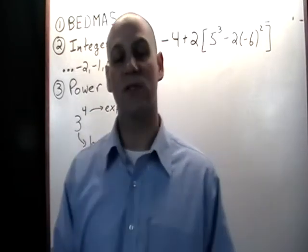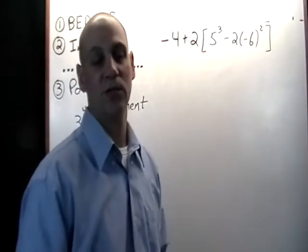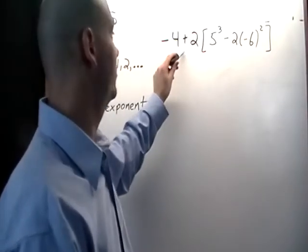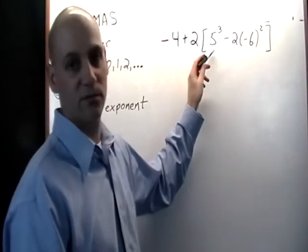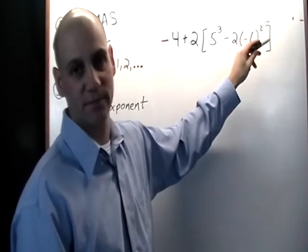So let's use this knowledge to now take a look at a calculation and see if we can complete something like this using BEDMAS. We want to calculate negative 4 plus 2 times bracket 5 cubed minus 2 times negative 6 squared bracket.